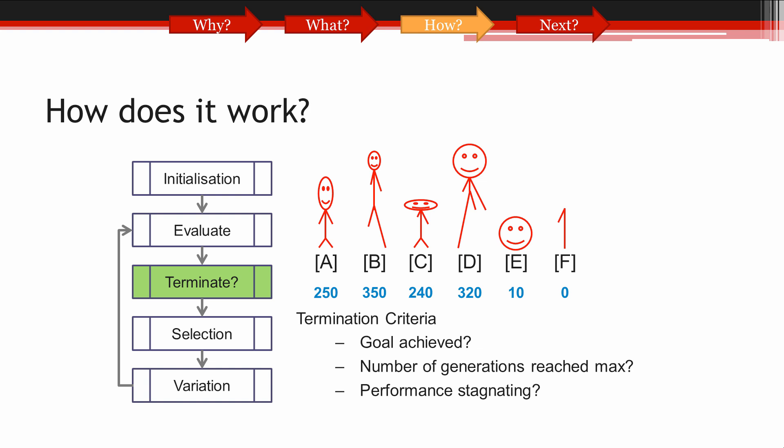These rules would be defined before starting the evolutionary process. Here I have given an example of some of these rules, which we will refer to as termination criteria. The first one is whether the goal has been achieved. So maybe we have an ideal fitness score in mind, and we'll check our solutions at every generation to see if any of them have made it. If so, we'll stop.